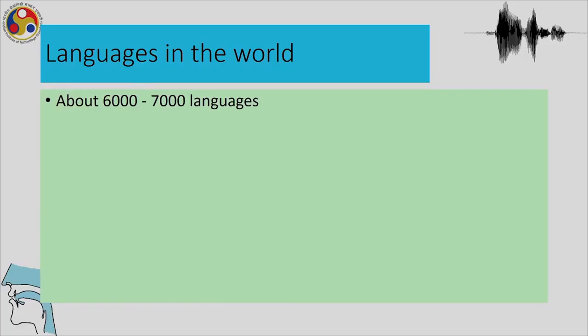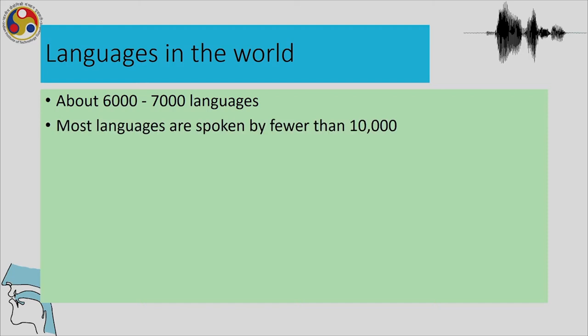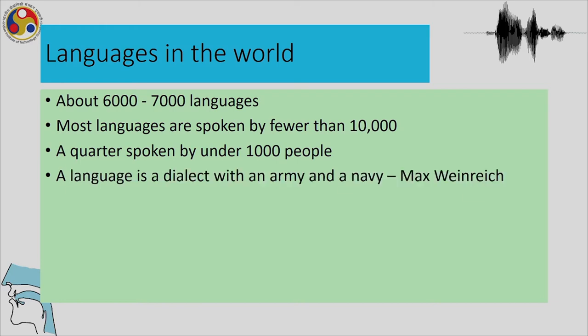There are about six to seven thousand languages in the world, and most languages are spoken by fewer than ten thousand people — a quarter spoken by under a thousand people. As the oft-quoted saying in linguistics goes: 'A language is a dialect with an army and a navy.'